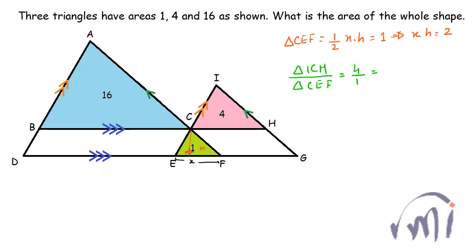So this is the ratio of the squares of their corresponding side, that is CH square and EF square. That means the ratio of CH and EF is equal to 2 is to 1, and this will also be the ratio of their heights.